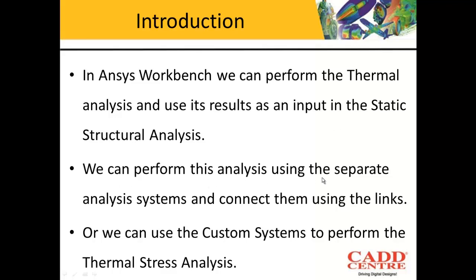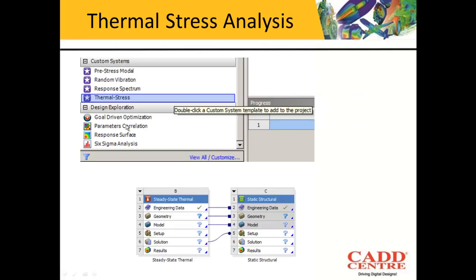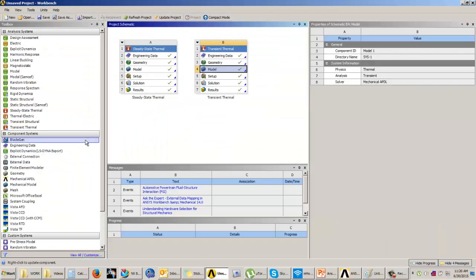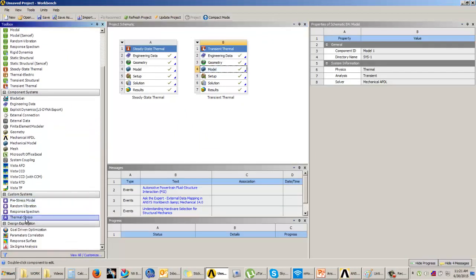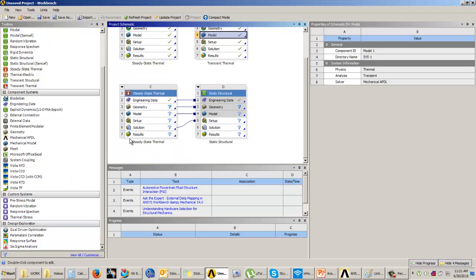You can perform these analyses separately using separate analysis systems and then use links to connect them — the same way we connected the static structural analysis and linear buckling analysis. Alternatively, we can use the Custom Systems option in the toolbox, where there is an option called Thermal Stress. When you double-click on this and add it to the project window, you will see two systems get added: the thermal system plus the static structural system.